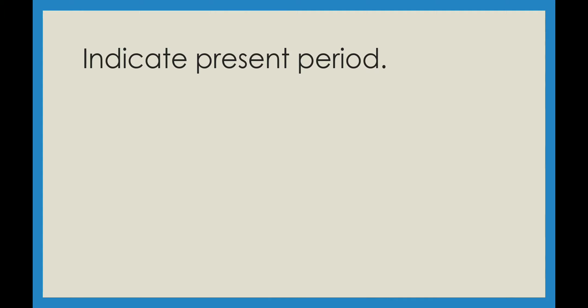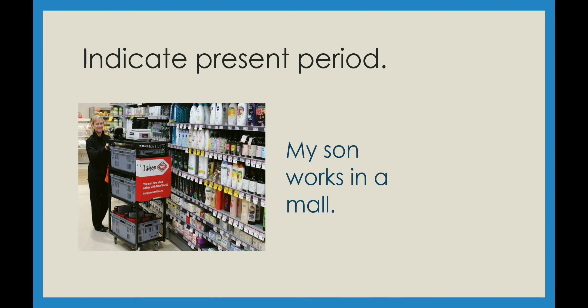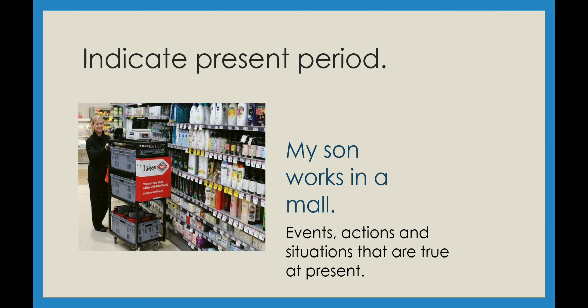Finally, simple present tense is used to indicate present period — actions, events, or situations which are true at present and can continue indefinitely. For example: My son works in a mall. He may not work there in the future, but right now, in the present period, he works in a mall. That is why we use present tense. Thank you students, I hope you have understood present tense and will revise it thoroughly.